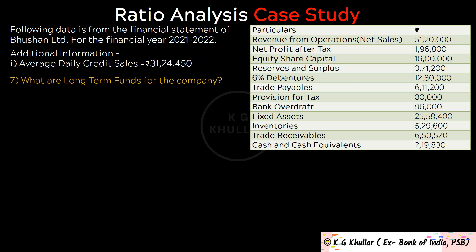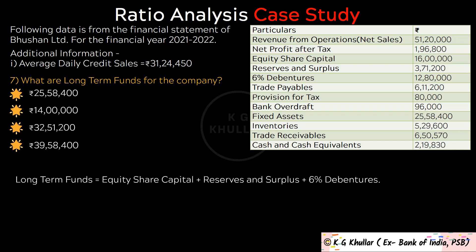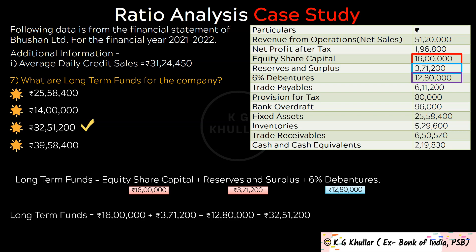The next question is: What are long term funds of the company? Long term funds in the given data are equity share capital plus reserves and surplus plus 6% debentures. That is Rs. 16,00,000 plus Rs. 3,71,200 plus Rs. 12,80,000 equals Rs. 32,51,200. The correct option is option C.